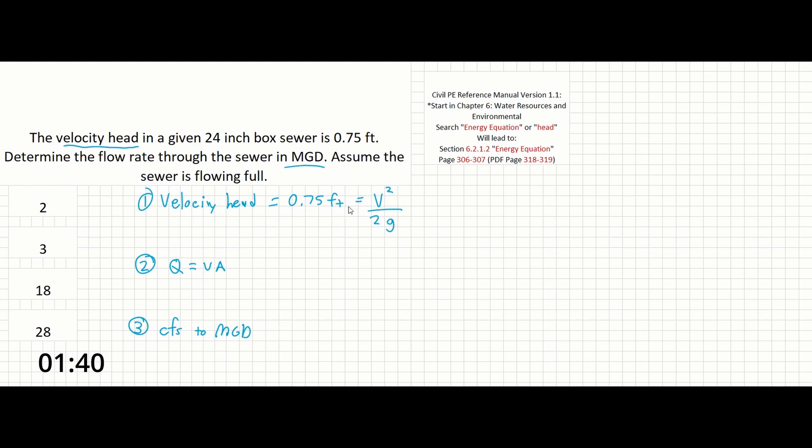Calculating velocity, we can say 0.75 feet equals v squared over 2 times 32.2 feet per second squared. Solving for v gives us 6.95 feet per second. This is a good unit conversion check because multiplying this gives us feet squared over second squared. The square root of that is feet per second.